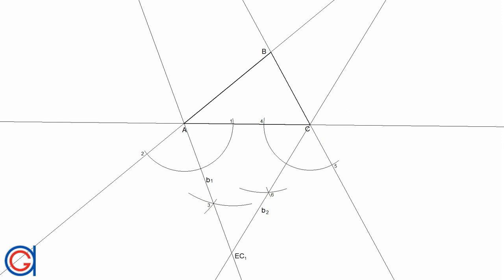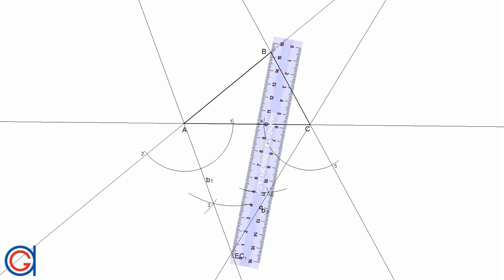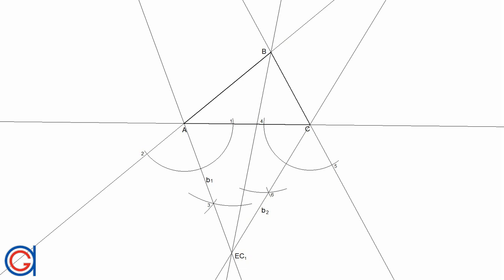Where these two bisectors intersect is going to be the first x-center of the x-circle to the side AC, and we will call it x-center 1 or EC1. To obtain the internal angular bisector B, you only have to join points B and EC1 and elongate it on both ends. We will call this line B3 or bisector 3.